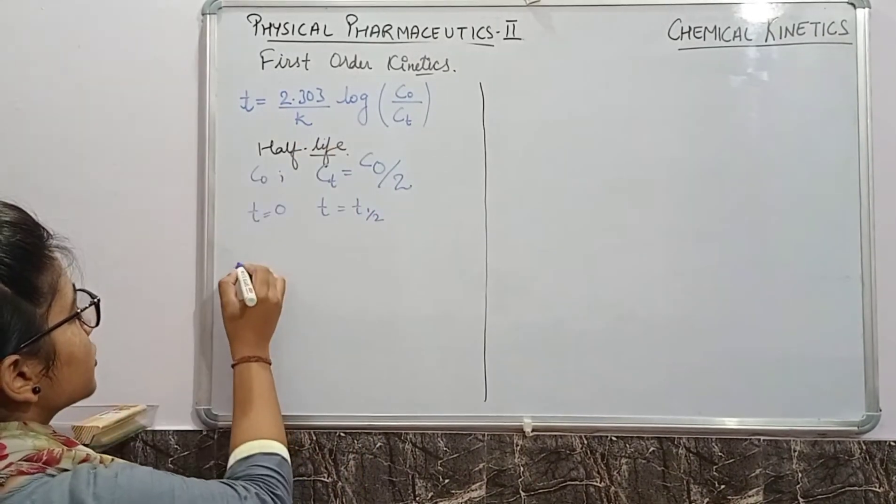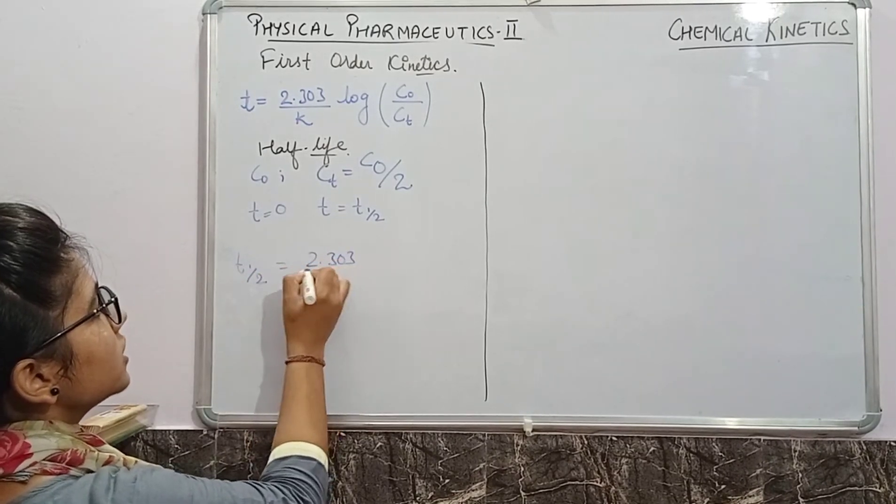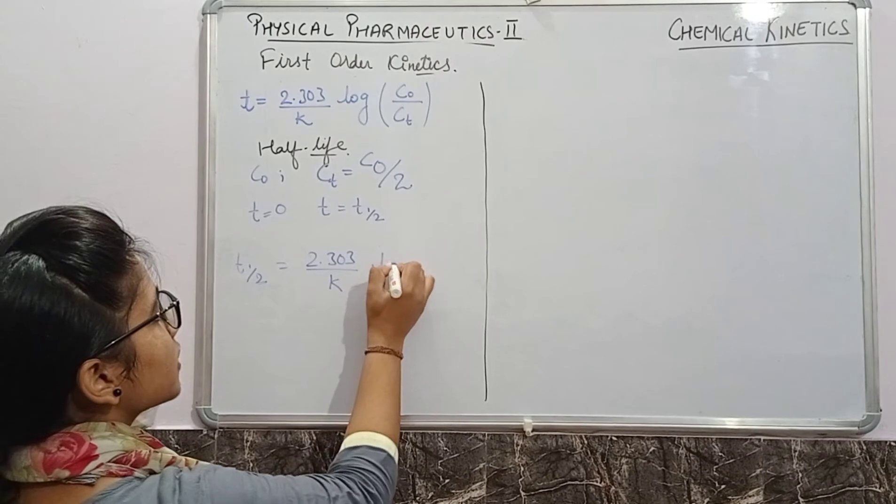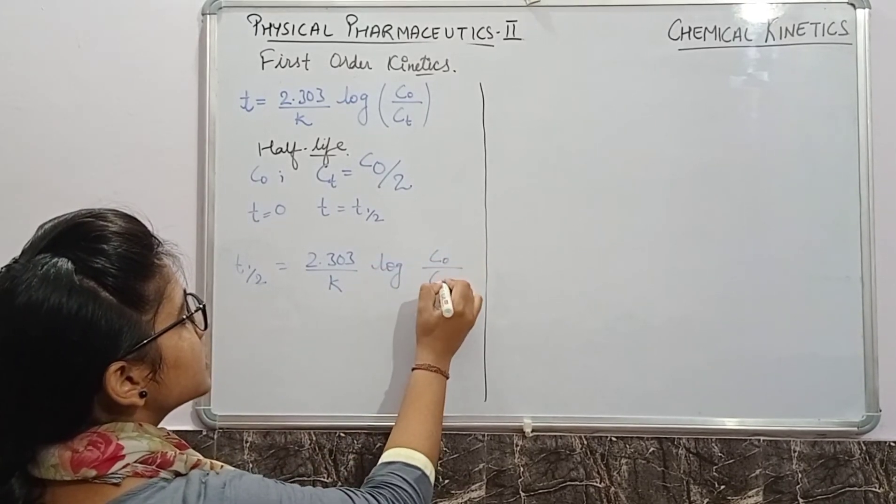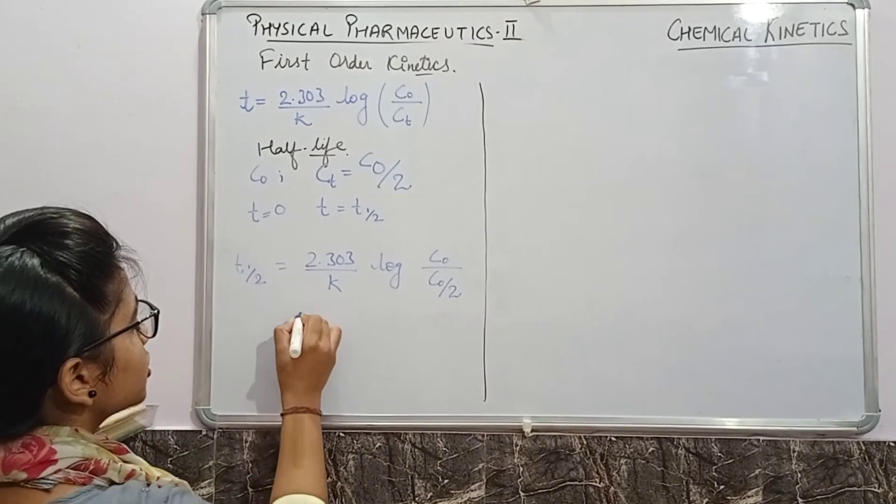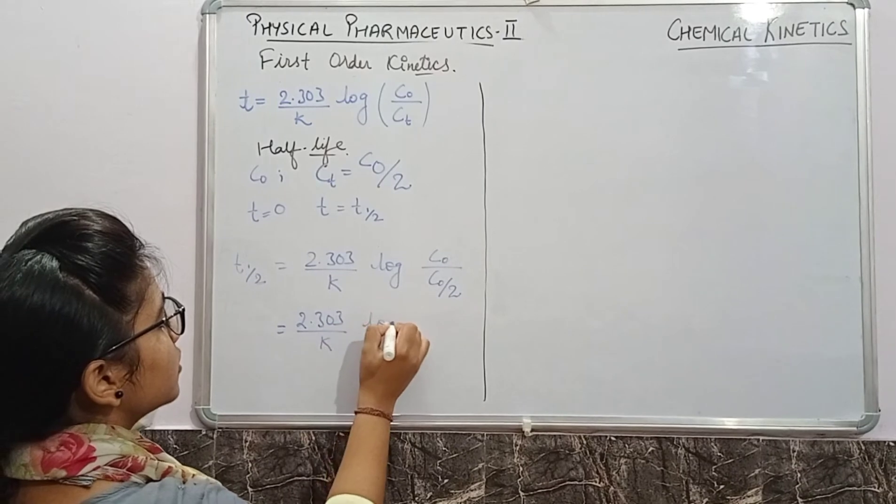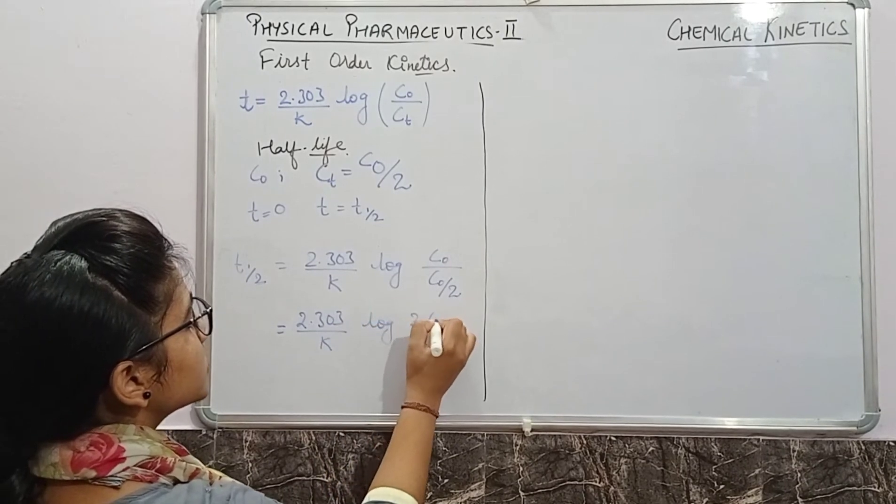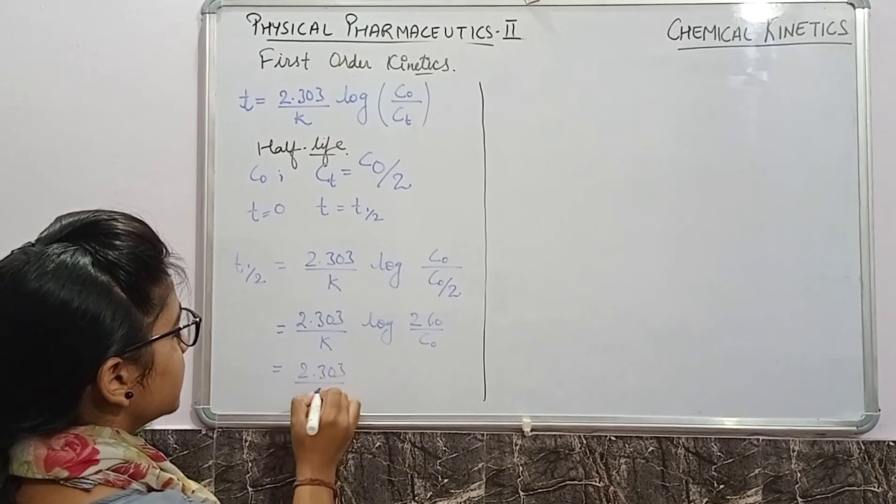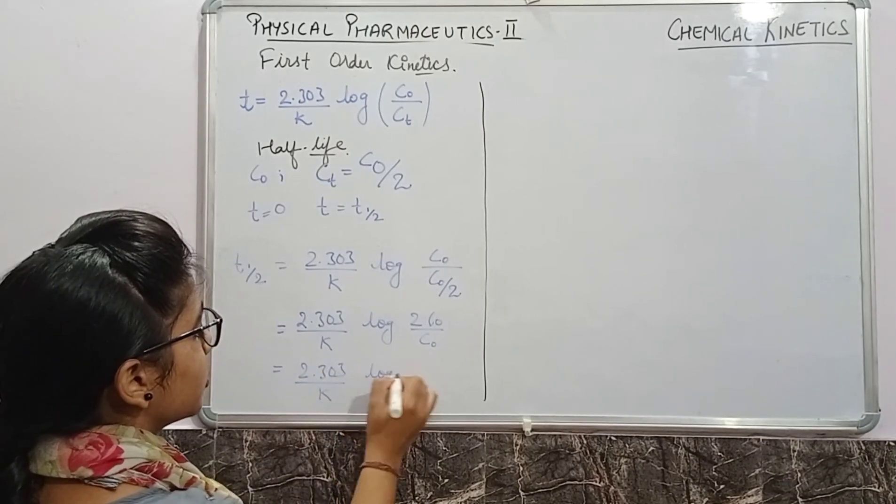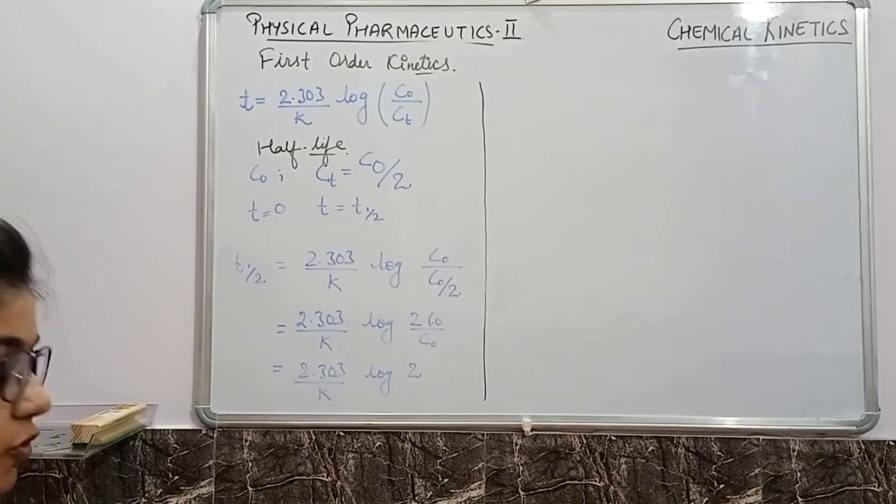So let's put these values in the equation. t1/2 equals 2.303 upon k log(c0/(c0/2)). The equation will become 2.303/k log(2c0/c0) equals 2.303/k log 2. This is the value we obtained.